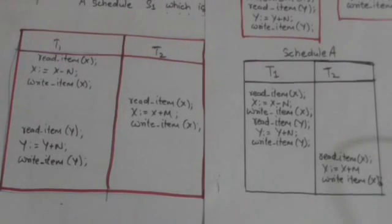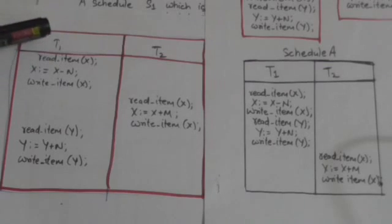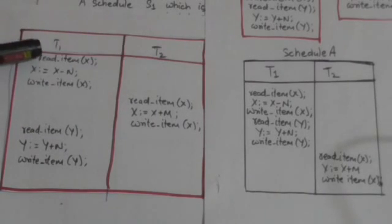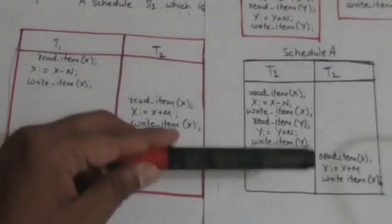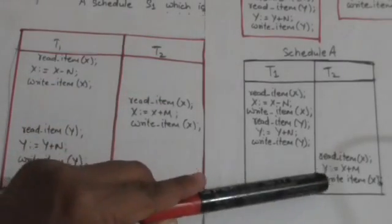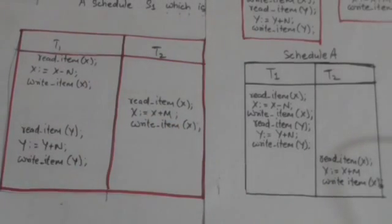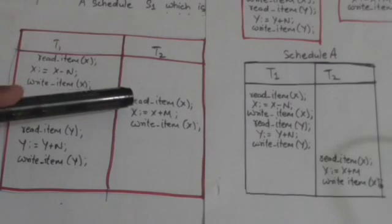Now consider this new schedule. Look at this conflicting operation: the read operation of transaction T1 and the write operation of transaction T2. Here, first the read operation of T1 is executed, and after this the write operation of transaction T2 is executed. The order of these two conflicting operations is the same in this schedule — first read item X of T1 is executed, and after this write item X of T2 is executed.